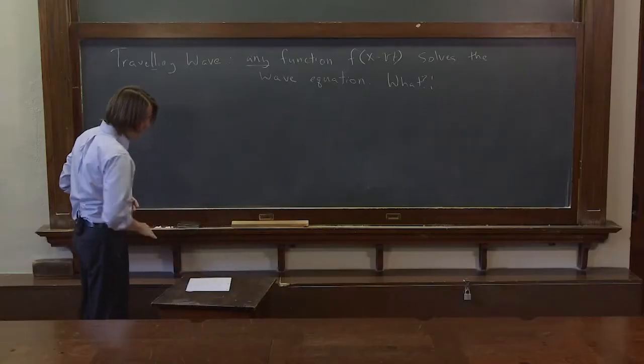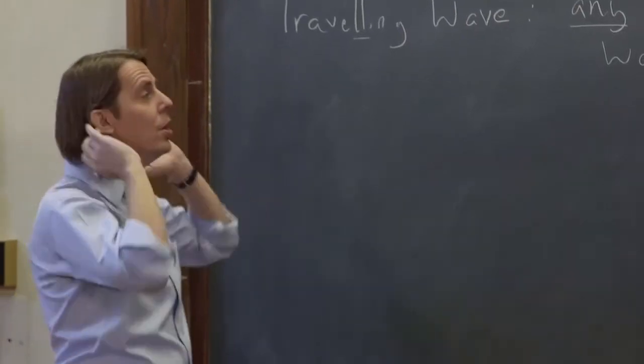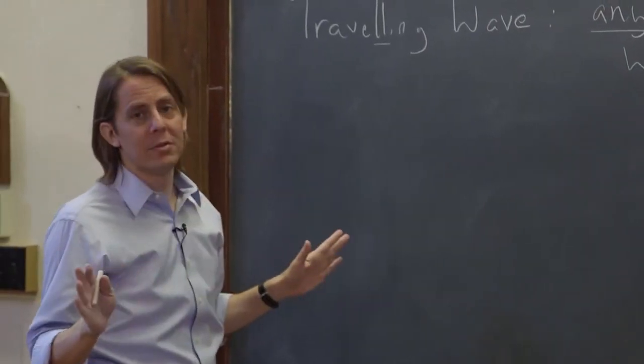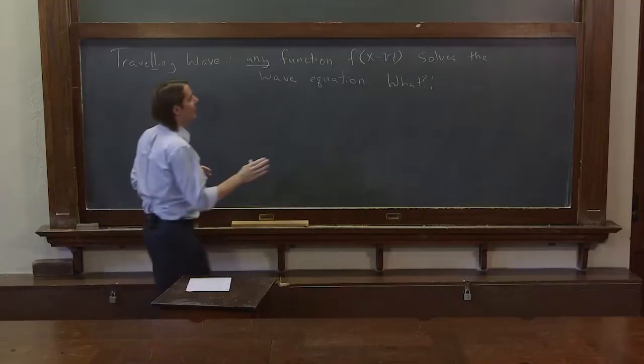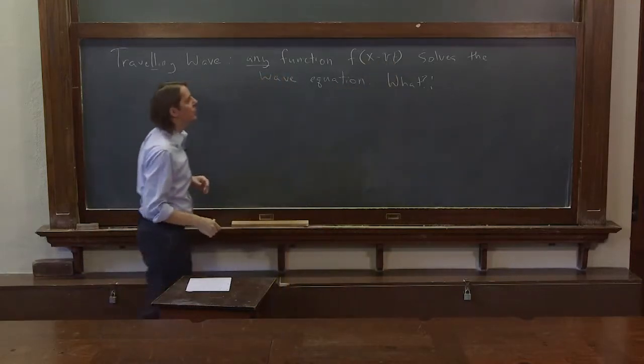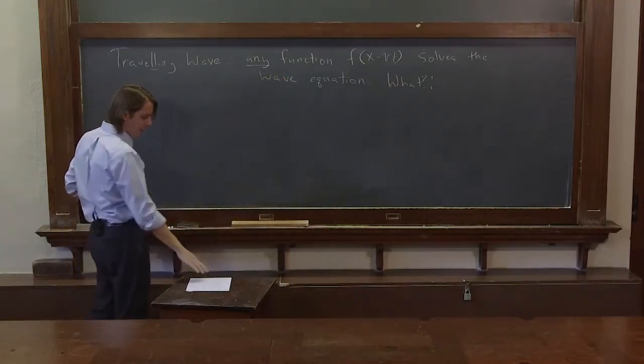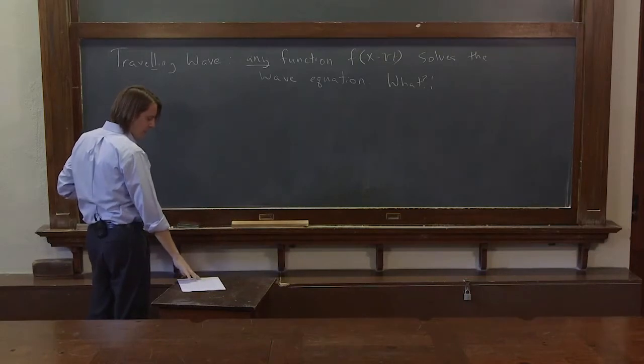So let me show you that this is true. So we're not even starting with a wave equation. We're just describing a function that's a function of space and a function of time. And everywhere we have those variables, it's written x minus vt. So we're going to prove it this way.